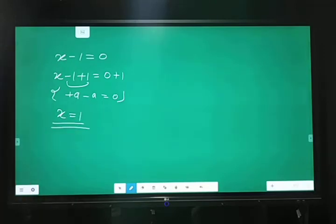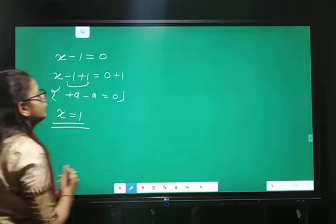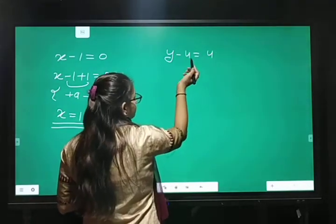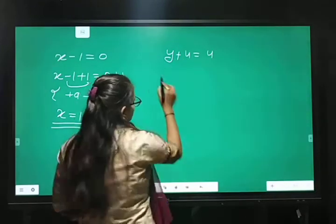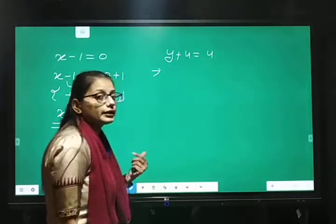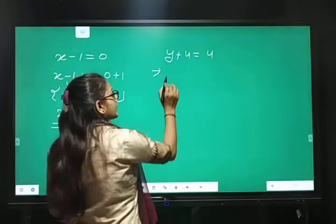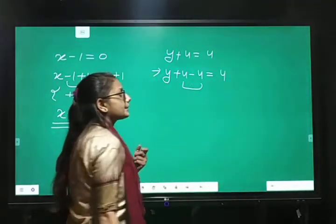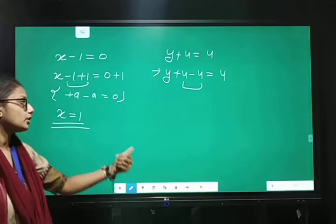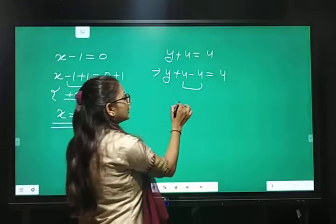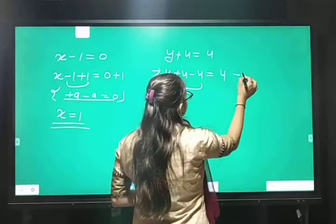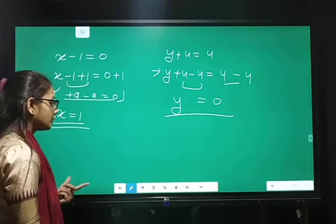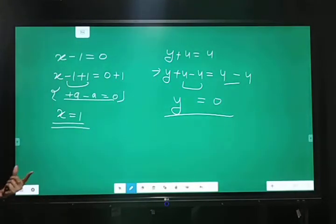One more example is y minus 4 equal 4. Y minus 4 equal 4. Yeah, y plus 4 equal 4 kar sakti ho. Toh subtracting. Dohno side mein kya karenge? Subtract karenge 4 ka. Toh y plus 4 equal minus 4 and 4. We know that plus 4 and minus 4 equal 0. Because properties of integer. So, value of y equal 0. 4 minus 4 equal 0. Yeh toh ho gaya addition or subtraction ke liye. Or multiplication or division ke liye.